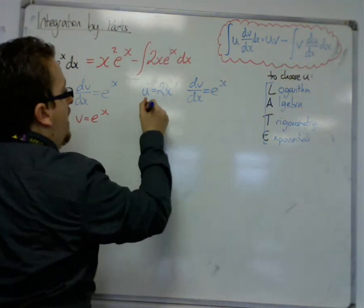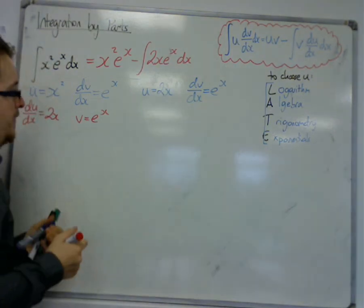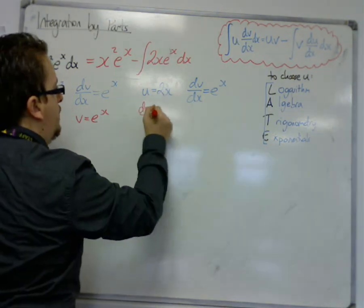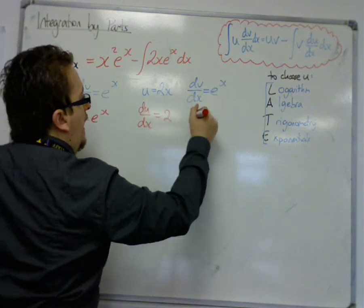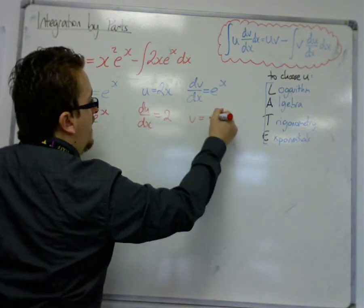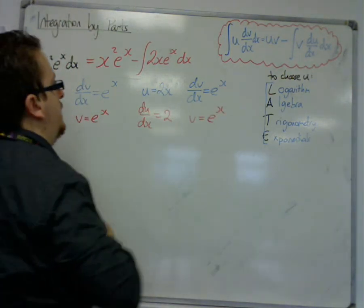So then we have du by dx, I'll keep my colours consistent here, so we have du by dx, it's differentiating 2x, that's just 2, and integrating dv by dx we get just e to the x. So let's see where this is going now.